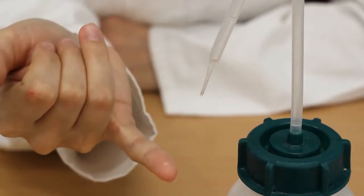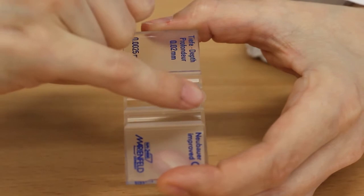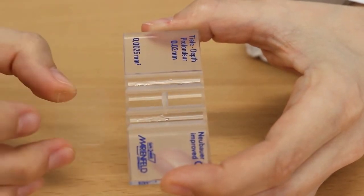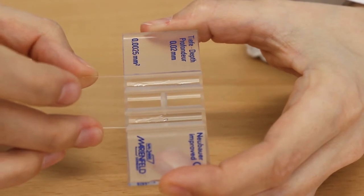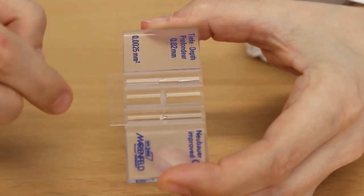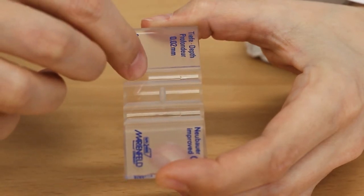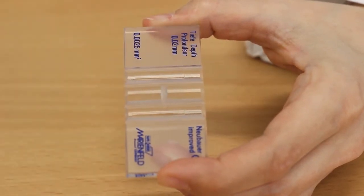To use a hemocytometer, moisten the two support structures with ethanol. Push the coverslip over the two support structures and wait until the ethanol evaporates. Make sure you're using a proper hemocytometer coverslip. Regular microscopy coverslips are not suited and they will bend and distort the volume being analyzed.